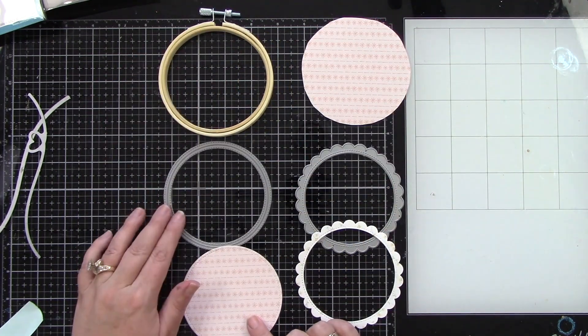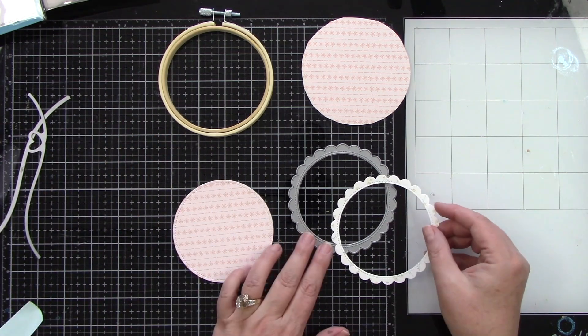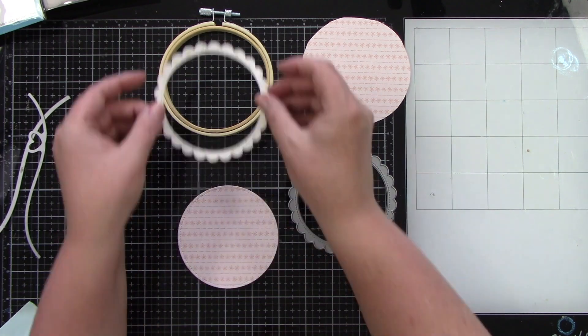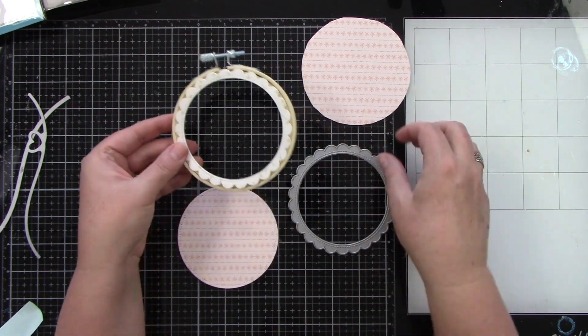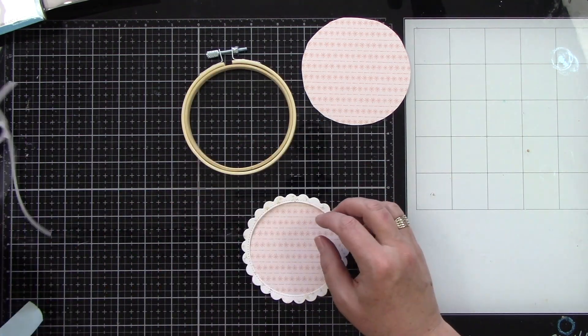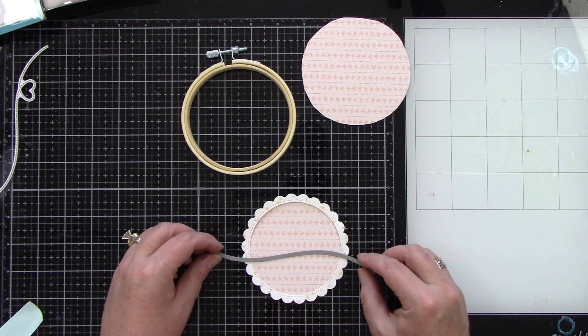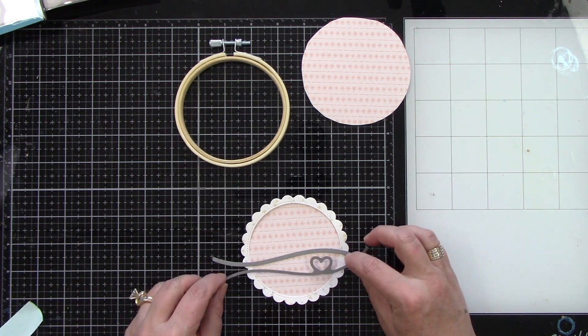Then I used the outside in stitched circle stackables and also the stitched scalloped frames. The frame is going to go on the front of our cute little embroidery hoop and I also have this circle in the background that I'm going to need to die cut a little piece for the front so this will have a 3D look to it.